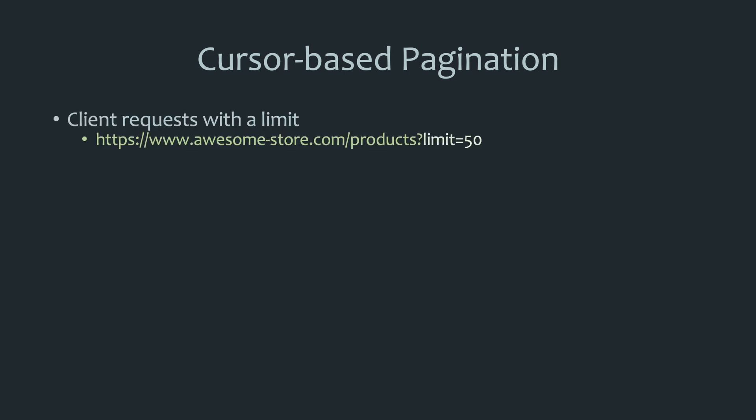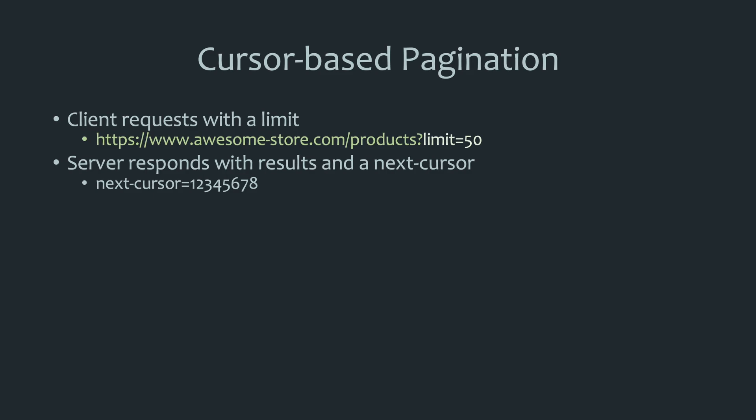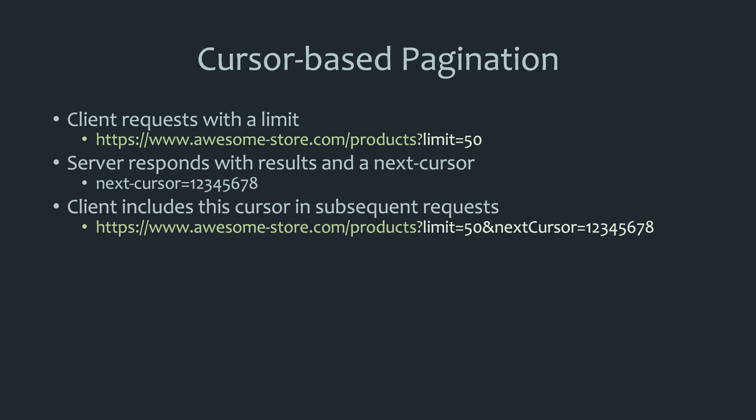Cursor-based pagination is a technique that addresses the problems of offset-based pagination. The client first sends a request to get a list of items by specifying a limit — nothing else. The server responds by returning the requested number of items, and in addition, it includes a next cursor — sometimes known as a continuation token. The client then sends this next cursor along with subsequent requests. The server uses these cursors to implement efficient queries, avoiding reading through the same records over and over. It's basically a pointer the server uses to improve performance.